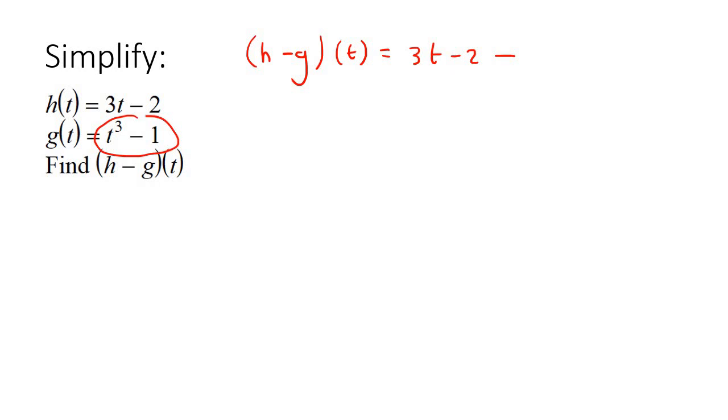But now g's equation is more than one term, so you must put that in a bracket. That's where a lot of learners make mistakes, is that that second one must go in a bracket, because this negative is going to go there, but it's also going to go there. And so you're going to end up with 3t minus 2, take away t cubed, plus 1.